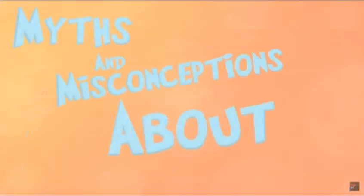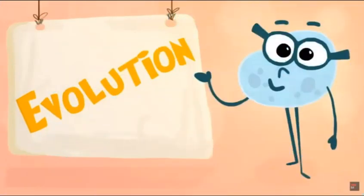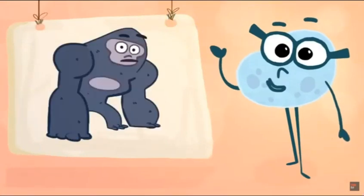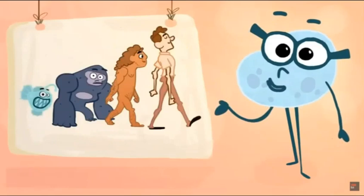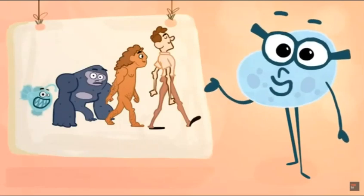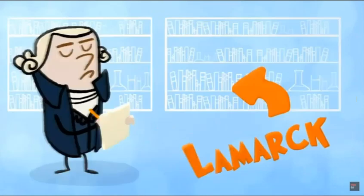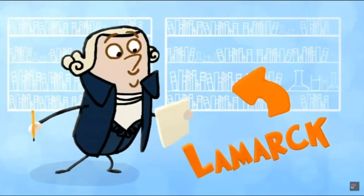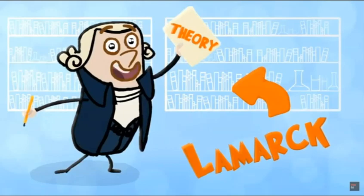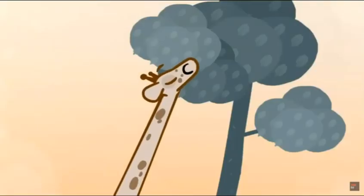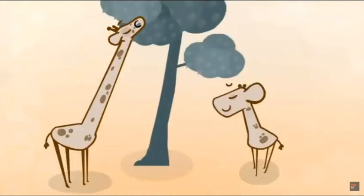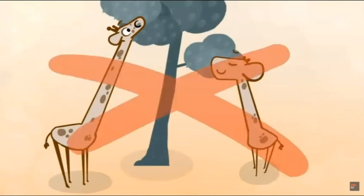Myths and misconceptions about evolution. Almost 60 years before Darwin published his book, Jean-Baptiste Lamarck proposed that creatures evolve by developing certain traits over their lifetimes and then passing those on to their offspring. For example, he thought that because giraffes spent their lives stretching to reach leaves on higher branches, their children would be born with longer necks. But we know now that's not how genetic inheritance works. Individual organisms don't evolve at all. Instead, random genetic mutations cause some giraffes to be born with longer necks, and that gives them a better chance to survive than those who weren't so lucky.